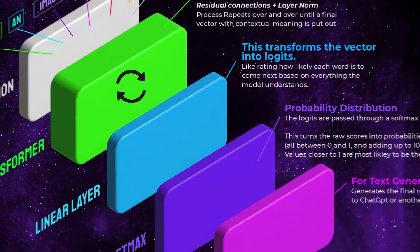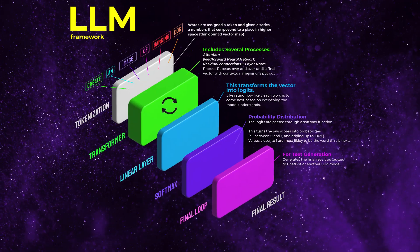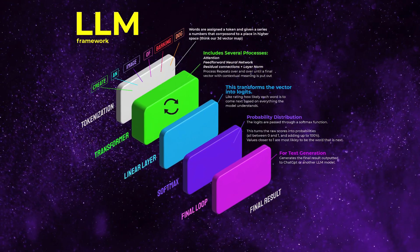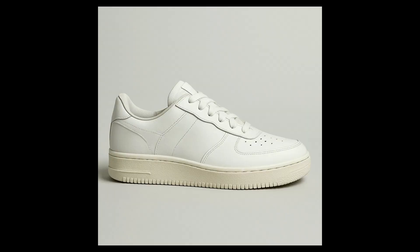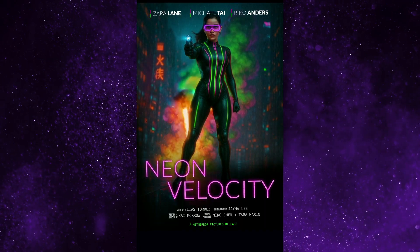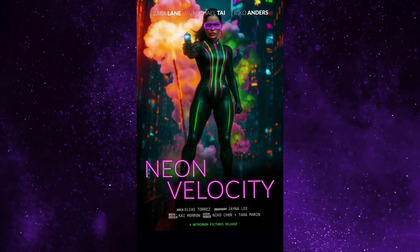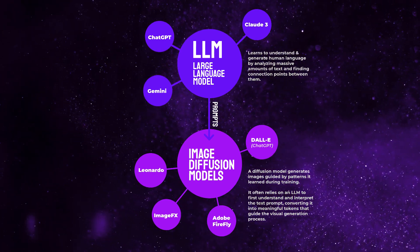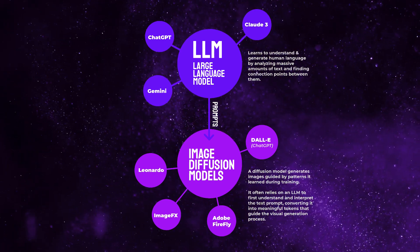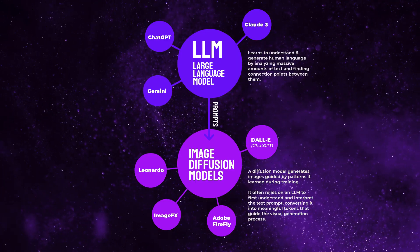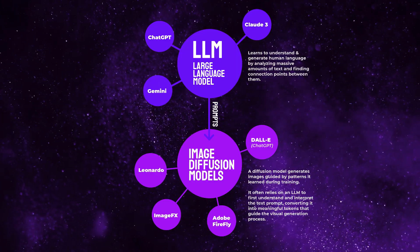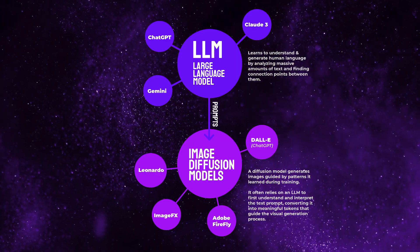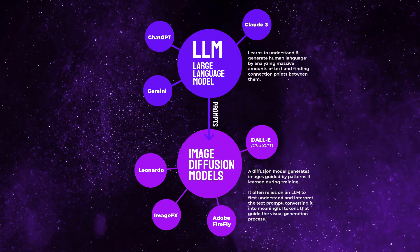But more than just that, learning about how LLMs work allows us to understand the all-important tool for designers in the next decade: the image and video generation tools we'll be using throughout the course. In this course, we'll focus on two types of AI models — the large language model, or LLM, and the image diffusion model, which helps us generate images from text.